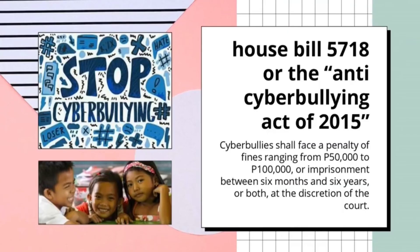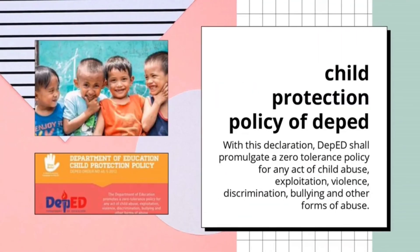This law is implemented by penalizing acts of cyberbullying. People are encouraged to become responsible netizens and are made accountable for their cyber actions. Child Protection Policy of DepEd: with this declaration, DepEd shall promulgate a zero-tolerance policy for any act of child abuse, exploitation, violence, discrimination, bullying, and other forms of abuse.